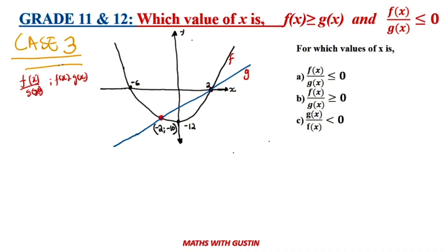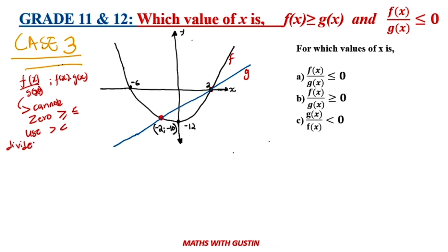The only difference is that g of x — the one at the bottom — you cannot allow it to be zero. Therefore, when it gets to the x-intercept, you need to make sure that even if the sign is given as greater than or equal to, or less than or equal to, you must use strictly greater than or less than — not equal to. Because if you say equal to, you are dividing by zero, and we know what happens when you divide by zero.